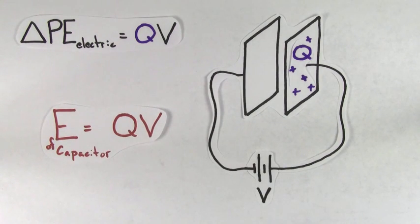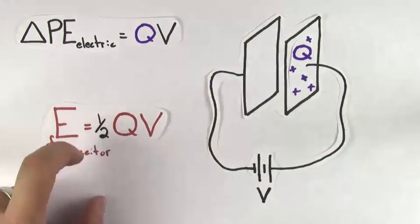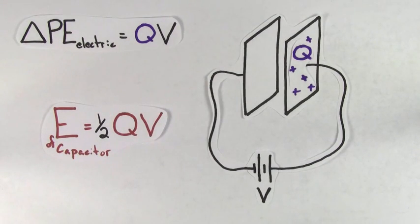Yeah, that's what I thought it would have been too, but it turns out the energy of a capacitor is one-half Q times V. Where does this one-half come from? How come the energy is not just Q times V?